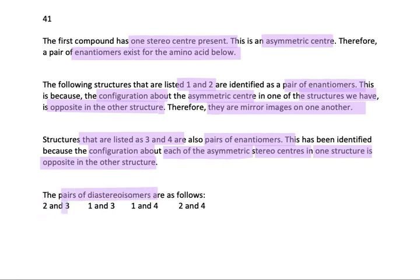The pairs of diastereoisomers are as follows: 2 and 3, 1 and 3, 1 and 4, and 2 and 4. When we have diastereoisomers, we have non-superimposable and non-mirror image stereoisomers.